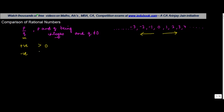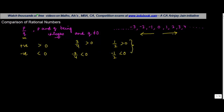Similarly, any negative rational number is going to be less than 0. For example, 3 upon 4 is obviously greater than 0, and 1 upon 2 is greater than 0. A negative number like minus 3 upon 4 is always less than 0, and minus 1 upon 2 is less than 0.